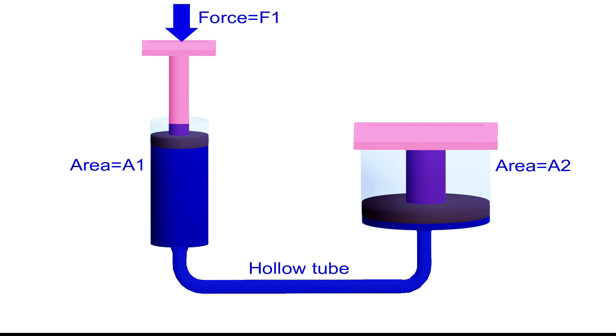When a force, F1, is applied on the smaller piston, the pressure of F1 by A1 is developed inside the smaller cylinder.